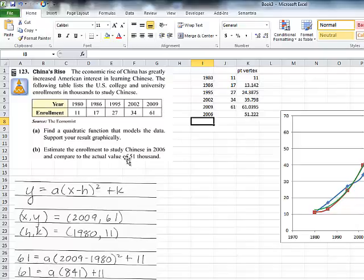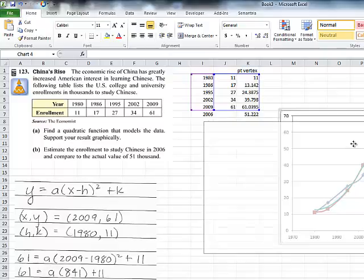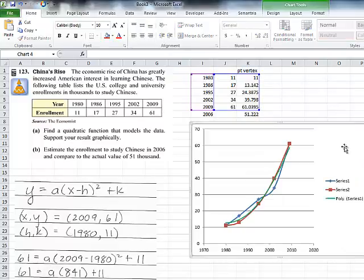And notice that the actual value is 51,000. So it turns out that the estimate was actually very, very good. So this ends this particular little video. So hopefully you understand how to use Excel to make a quadratic trend line.